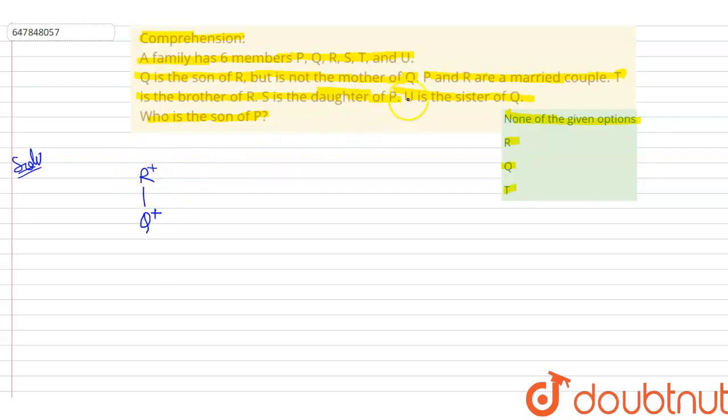In the next line it's written P and R are married, a married couple. That means R and P are a married couple. So R is male, so P will be female. That means we put a minus sign. And P and R are married couple. I'm showing them with a dark line.